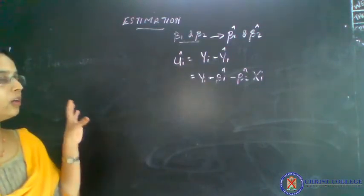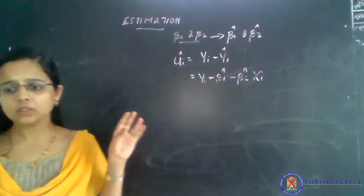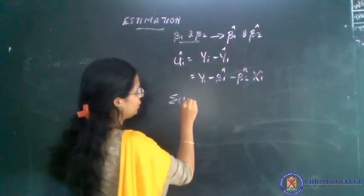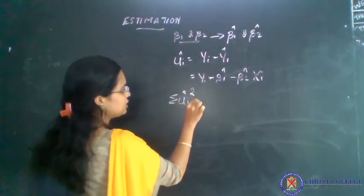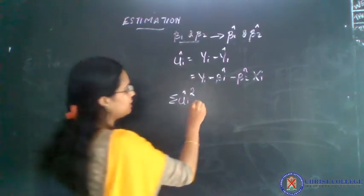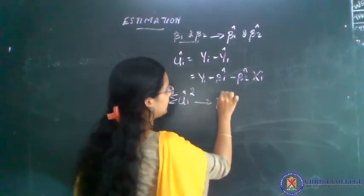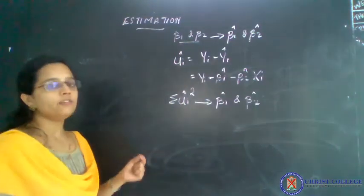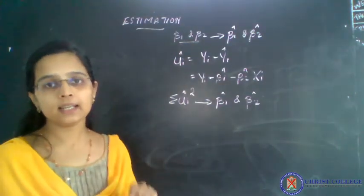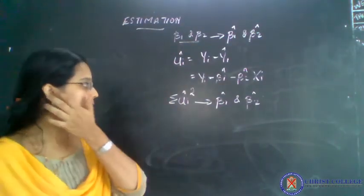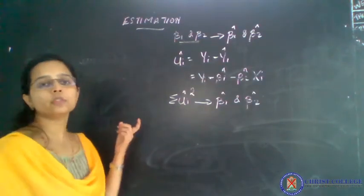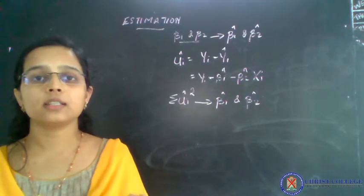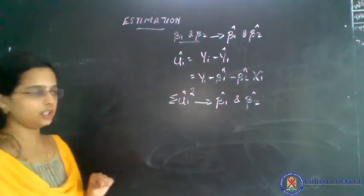The sum of the square of deviation, or sum of the squared residuals, that is sigma u-hat squared, should be kept as minimum as possible in order to find out beta 1 hat and beta 2 hat. For this, we have to follow a necessary condition with respect to sigma u-hat squared in terms of beta 1 and beta 2, and that necessary condition is the first order condition.